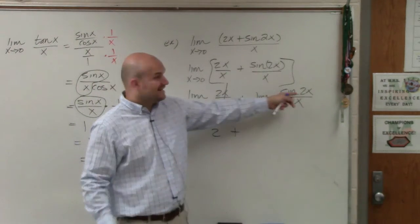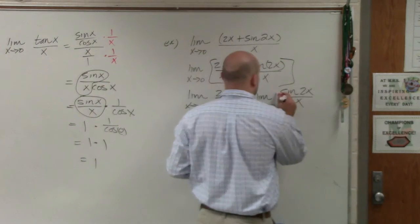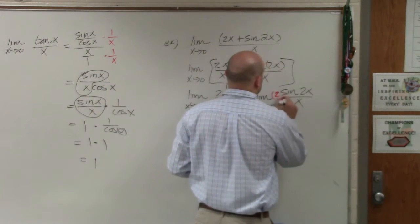Over here, I need this to be a 2x in the denominator, right? So therefore, I need to multiply by 2 over 2.